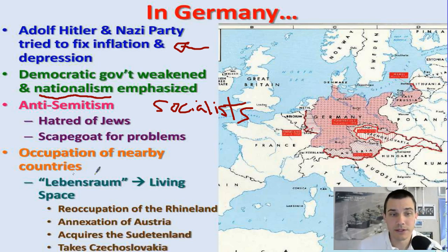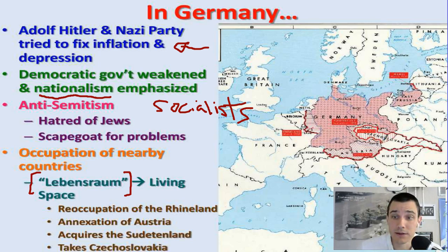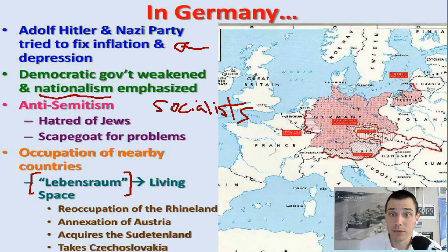Another concept you're going to see is Lebensraum — the German living space. Hitler wanted space for his German people to expand and live. He's going to reoccupy and take some of these territories — he annexes Austria, he takes Czechoslovakia and other areas. People in Europe — Britain, France, Poland, probably the Soviet Union too — are freaking out, wondering what's going on with this guy.